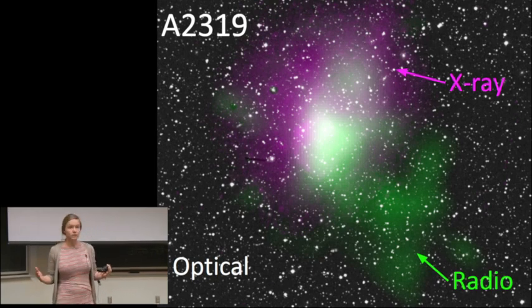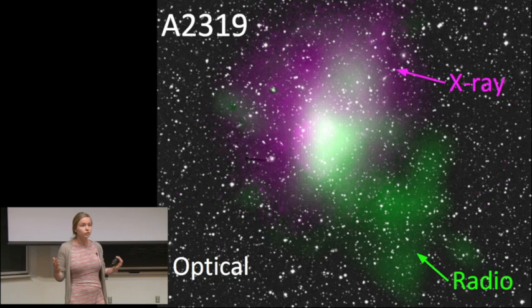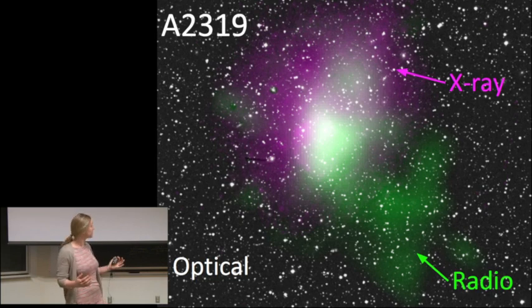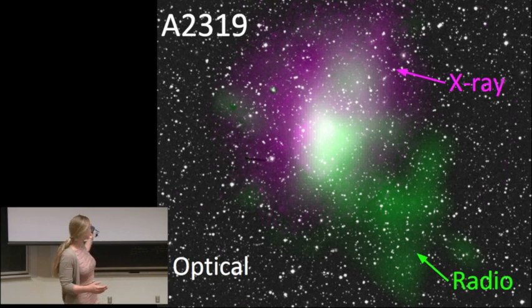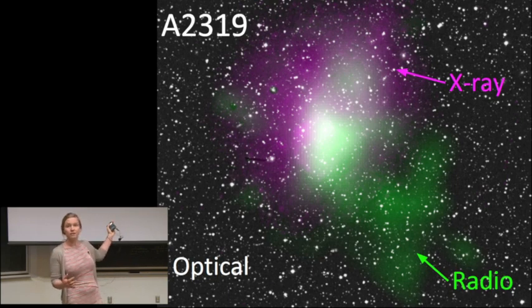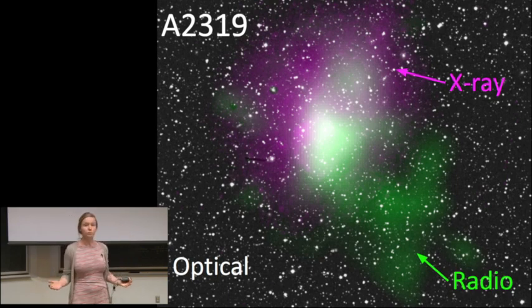One such component are the hundreds of galaxies that can be seen with optical or visible light telescopes, seen here in black and white. Most of these white flecks you see are galaxies, much like our own Milky Way.